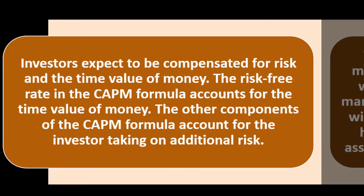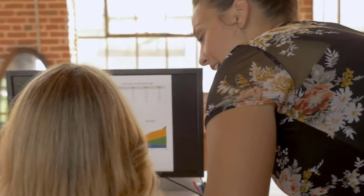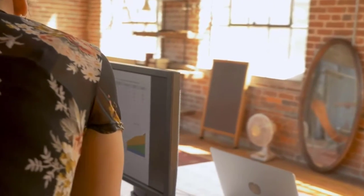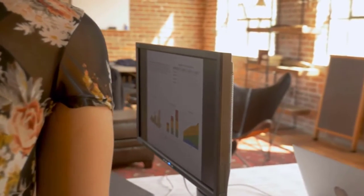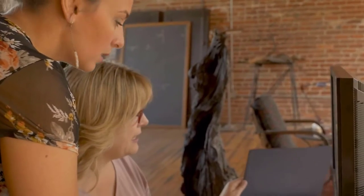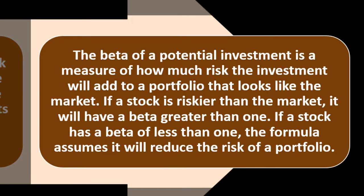The time value of money uses a standard rate for our calculations, and then we factor in other or additional risks. We break these risks down into numbers we can compare for numerical decision-making. The beta of a potential investment is a measure of how much risk that investment will add to a portfolio that looks like the market.